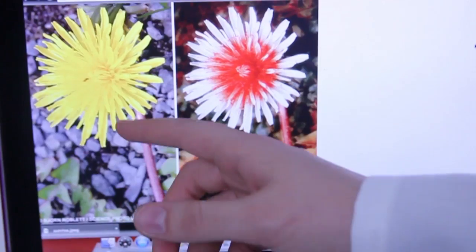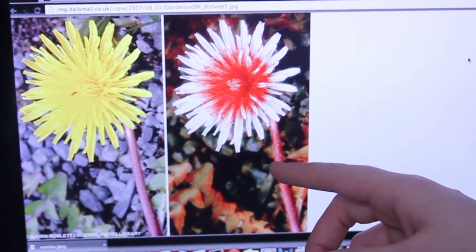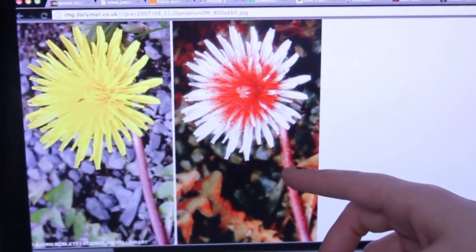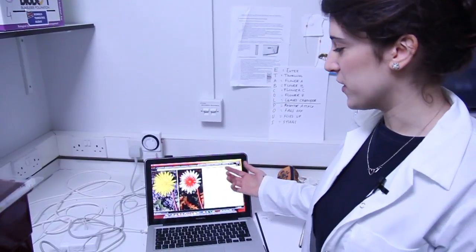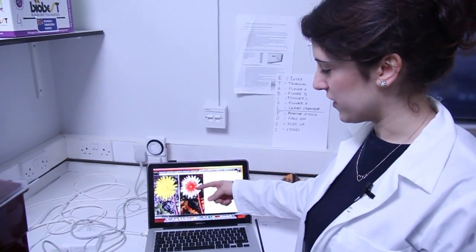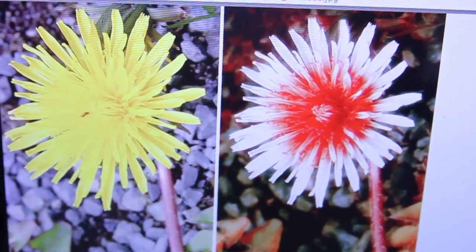What we have here is how we see a dandelion, and then we have how a lot of insects, including bees, see the dandelion. Obviously it's not very yellow to them, but what's key about it is that it's got almost like a big target in the middle. And what that is, is UV light being reflected.